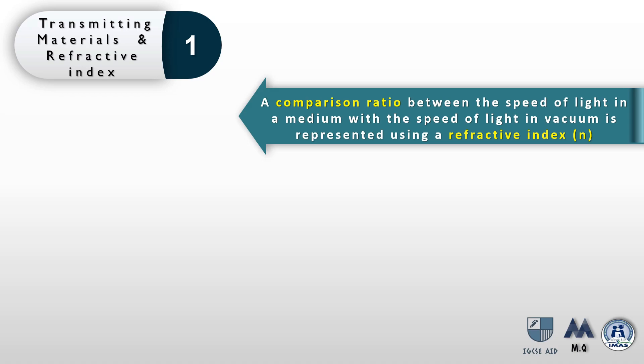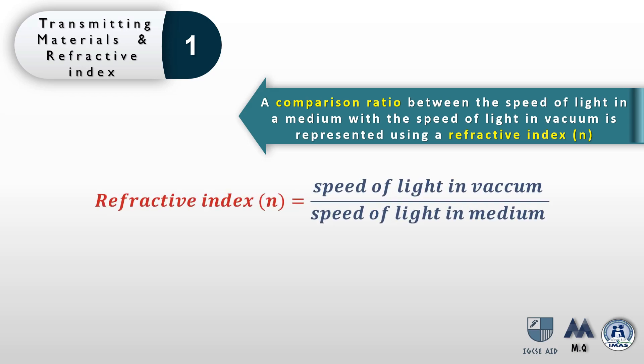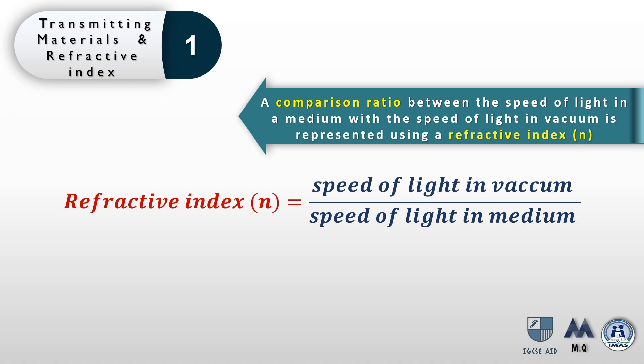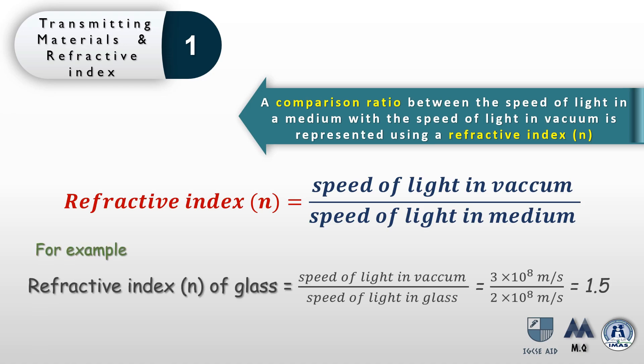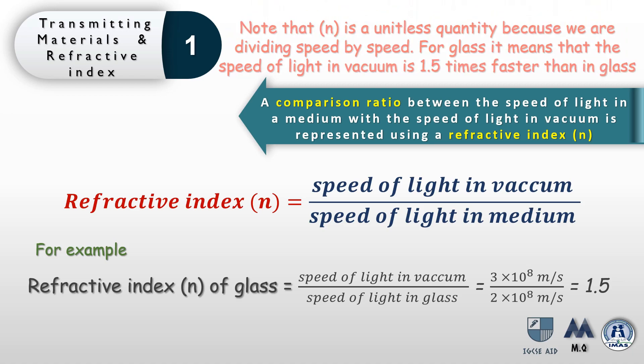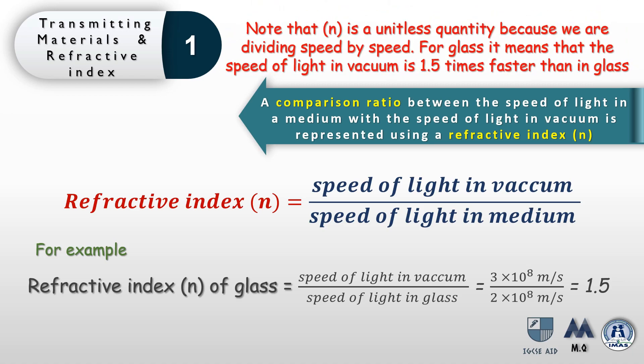The formula for refractive index, abbreviated by the letter n, is the speed of light in vacuum divided by the speed of light in a medium. For example, the refractive index of glass: 300 million meters per second divided by 200 million meters per second gives a refractive index of 1.5. Note that the refractive index is a unitless quantity because we are dividing speed by speed — the meters per second cancel out.